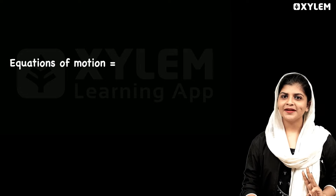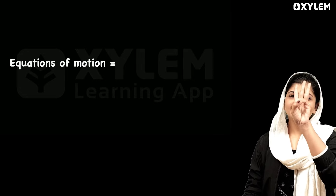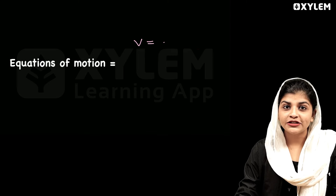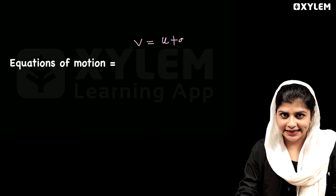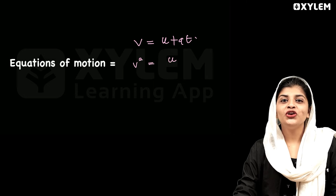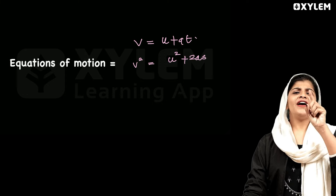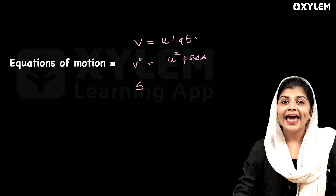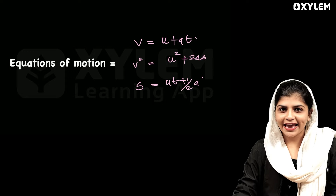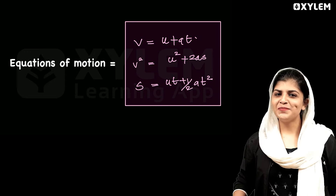The first equation of motion is very very important. We need to know three equations. First: v is equal to u plus at. Second: v squared is equal to u squared plus 2as. Third: S is equal to ut plus half a t squared. These three equations are very important.